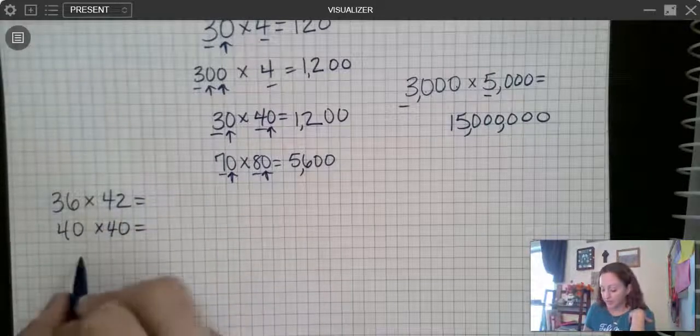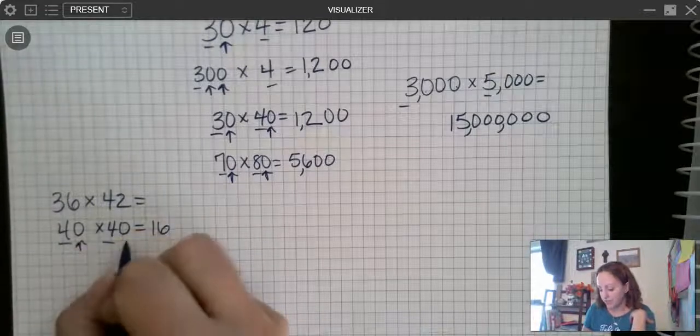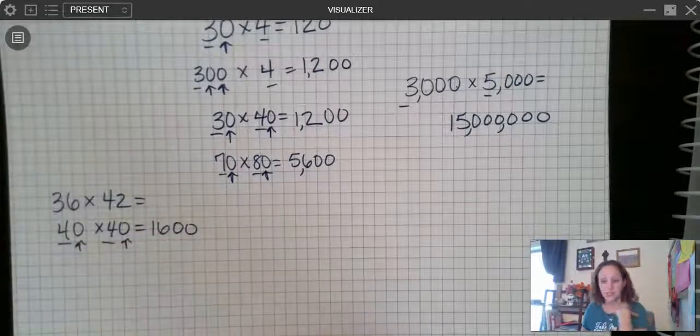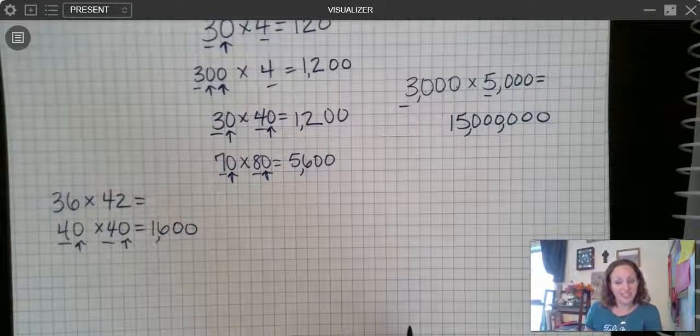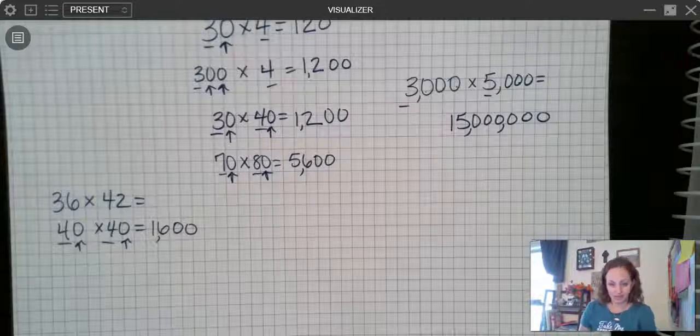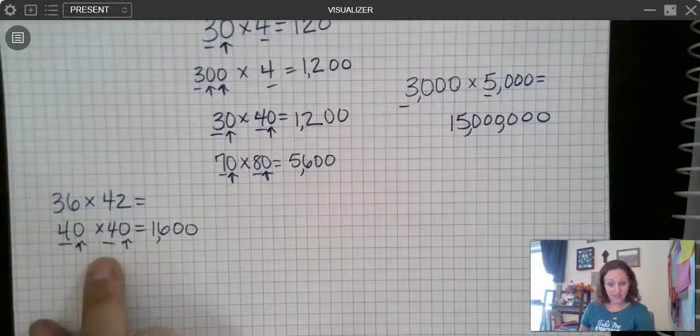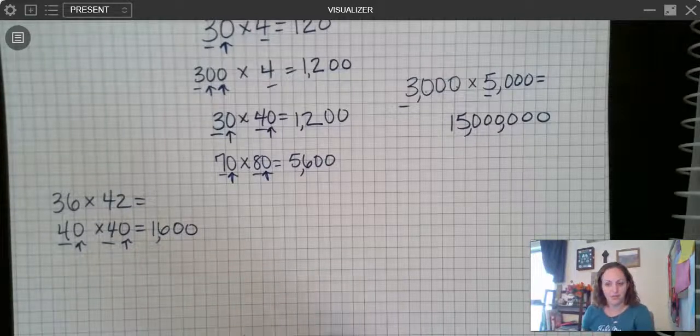Well now this is easy to estimate because 4 times 4 I know is 16 and I have two zeros so I add the two zeros on at the end. And that's using rounding to estimate. We've talked a lot about rounding. When we're doing it with multiplication we're just rounding to the nearest tens and we add in our zeros after we've multiplied the front end of the number.